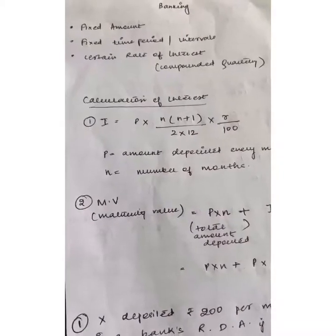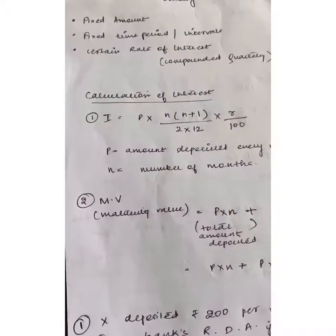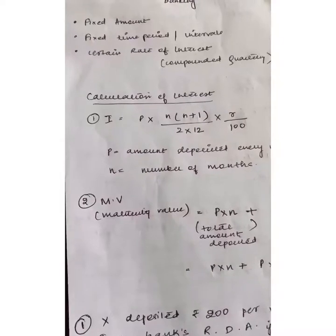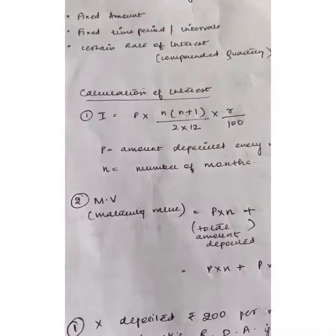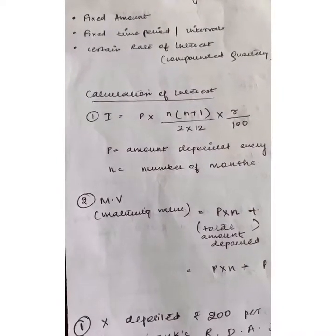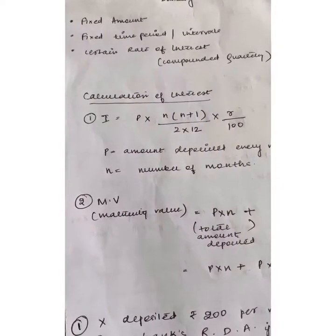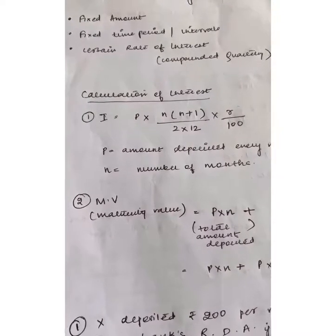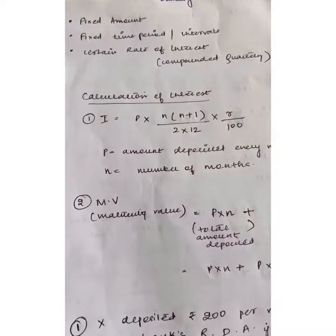As we are now clear with what exactly is banking and recurring deposit account, let us consider the details. A recurring deposit account involves three basic ingredients. One is the fixed amount — the depositor deposits a fixed amount every interval, for example Rs.100 every month, denoted as P. Next is the fixed time period or intervals, which could be monthly or every 6 months depending on the bank's terms. Next is the certain rate of interest, which the bank provides to the depositor for depositing money in the recurring deposit account.